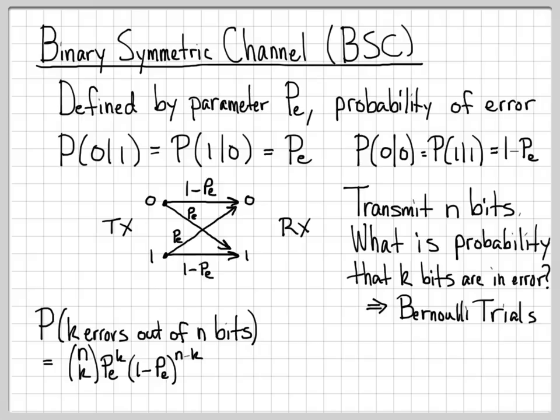And remember, this formulation does not care about where these k errors have occurred. So if I was transmitting 10 bits, if n was equal to 10, this is the probability that accounts for all different arrangements of k errors. So maybe the first k were an error, maybe the last k bits were an error, maybe it was some random assortment of the n bits, k of them were an error. This accounts for all permutations of k out of the n.